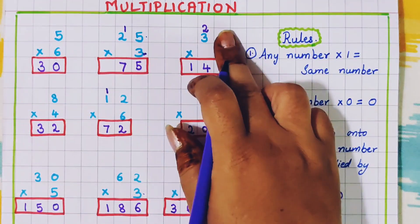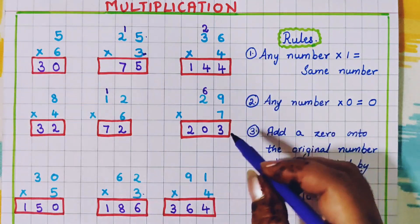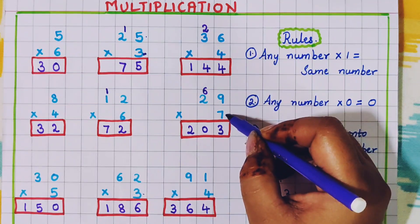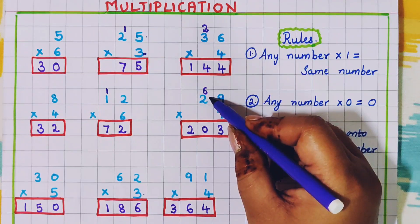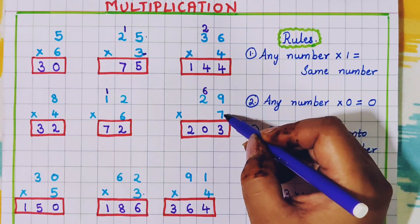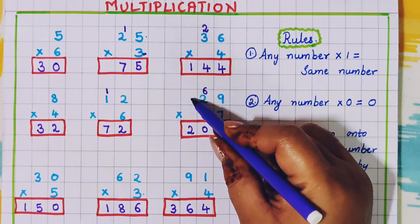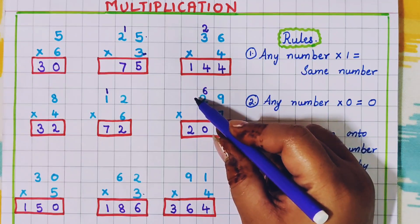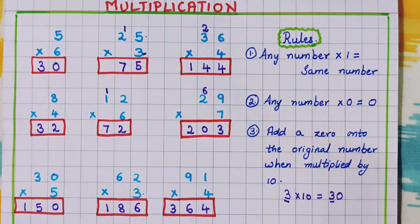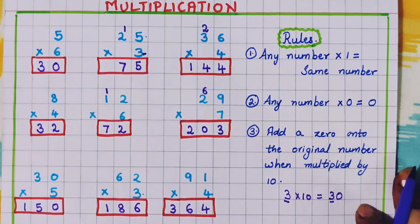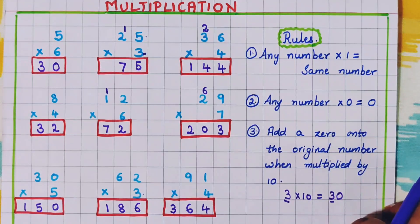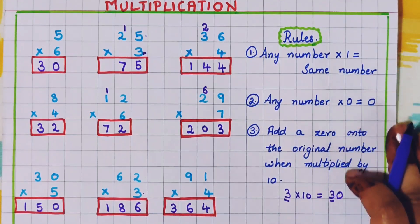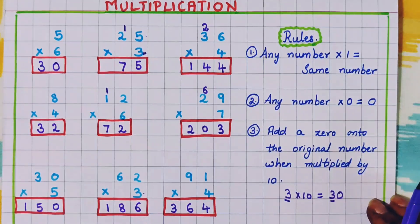I hope the multiplication problems are clear to you. First you have to multiply the multiplier with the 1s digit, then move to the 10s digit, and if it is a 3-digit problem, next move towards the 100s digit. In the coming videos I will teach 3-digit multiplication. I hope this basic multiplication is clear to you. If you enjoyed this video, do give it a like, share this video and subscribe to our channel. Bye.